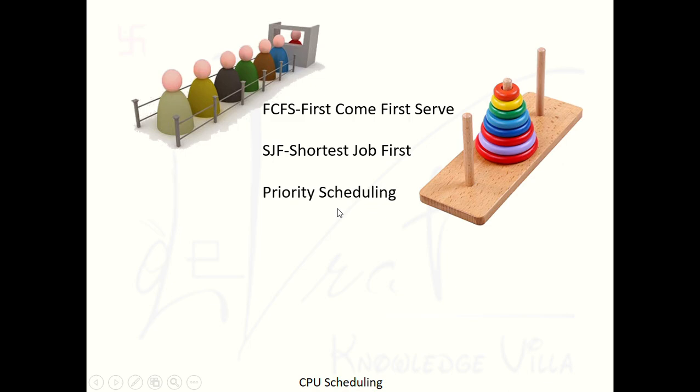Third is Priority Scheduling, which works on the basis of priority. Like in a VIP culture — at a famous temple with a long queue, VIP people such as actors or ministers can go directly inside without standing in line. Similarly, an ambulance on an emergency gets first priority on the road. Processes with higher priority get the CPU first.